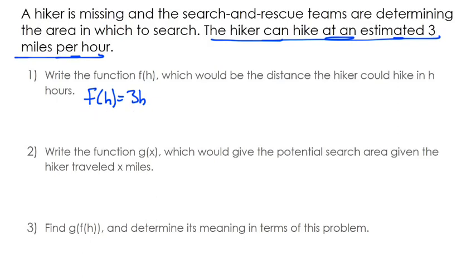But then it says give the g of x function, which would give the potential search area given the hiker traveled x miles. So here's what we've got to think about. Picture what's happening here. When a hiker gets lost, they're off the trail, obviously. If here's where a hiker is seen last, he could have gone in that direction, he could have gone in that direction, he could have come here, he could have come here. Meaning our search area is going to be roughly circular shaped.